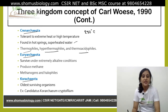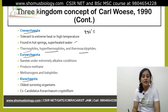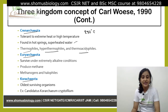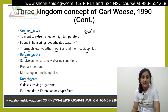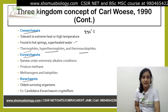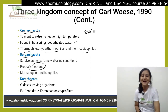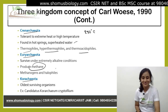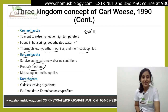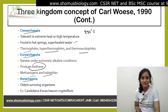Euryarchaeota. These can survive under extremely alkaline conditions and have the ability to produce methane, unlike any other living being on Earth. This group includes methanogens and halophiles.